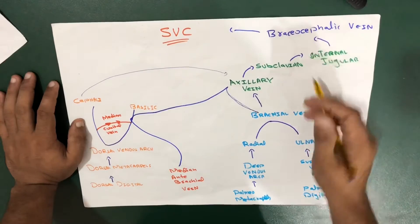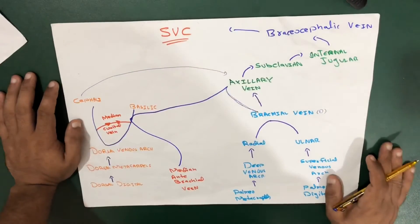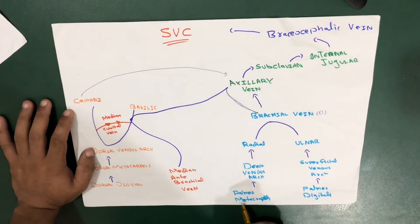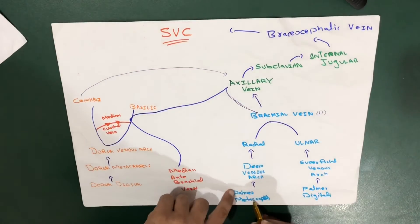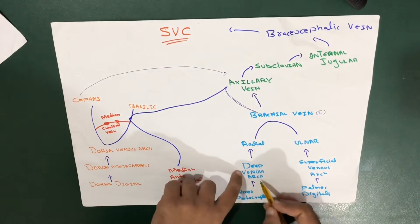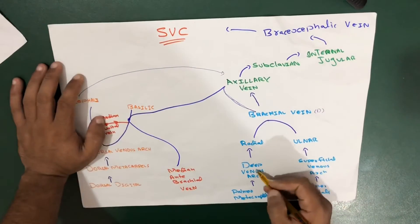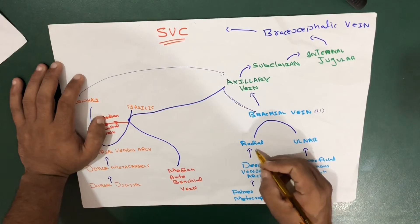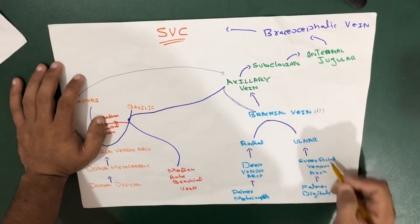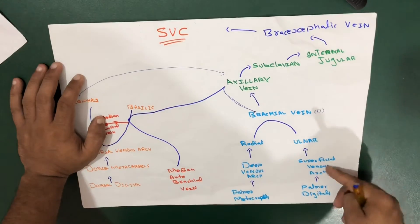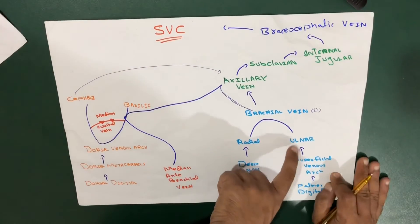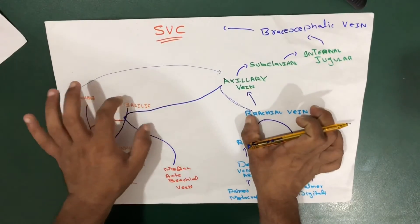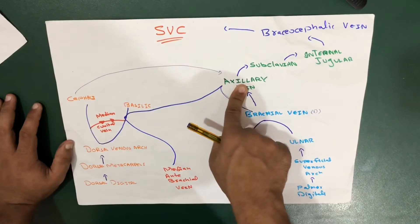Now for the deep veins — it's straightforward. Starting from the palmar metacarpal veins, they collect blood and drain into the deep venous arc inside the hand. This follows the arterial route and drains into the radial vein. The palmar digital veins drain into the superficial venous arc, which drains into the ulnar vein. When radial and ulnar veins combine, they give rise to the brachial vein. The brachial vein and basilic vein then combine to form the axillary vein.